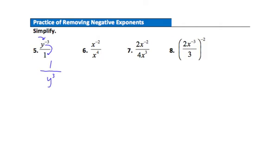Question 6: one negative exponent — take x to the negative second and bring it down to the denominator. That leaves 1 in the numerator and x to the fourth times x to the second in the denominator. Four x's multiplied together and then two more gives altogether six x's multiplied, so x to the sixth in the denominator: 1 over x to the sixth.